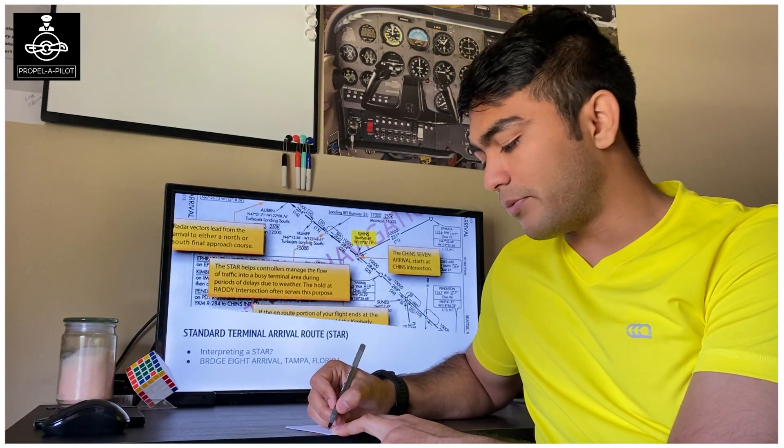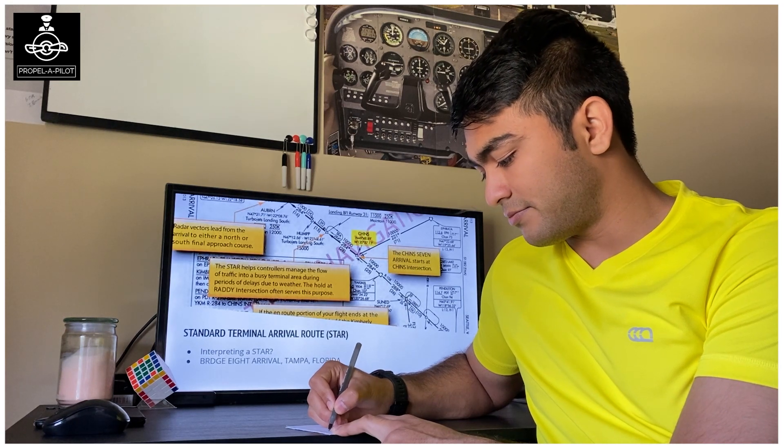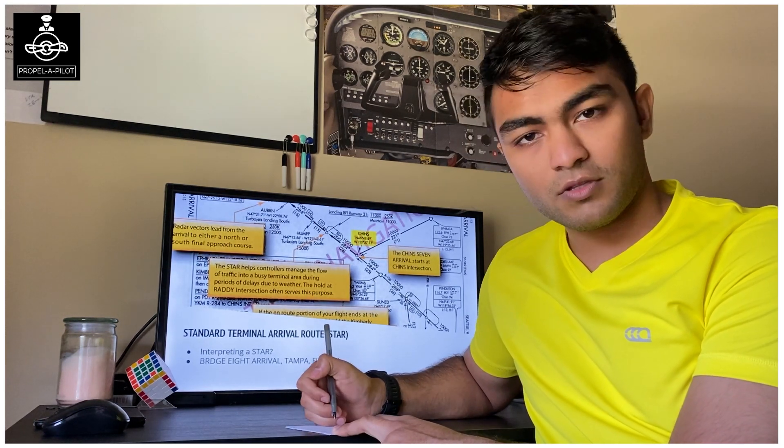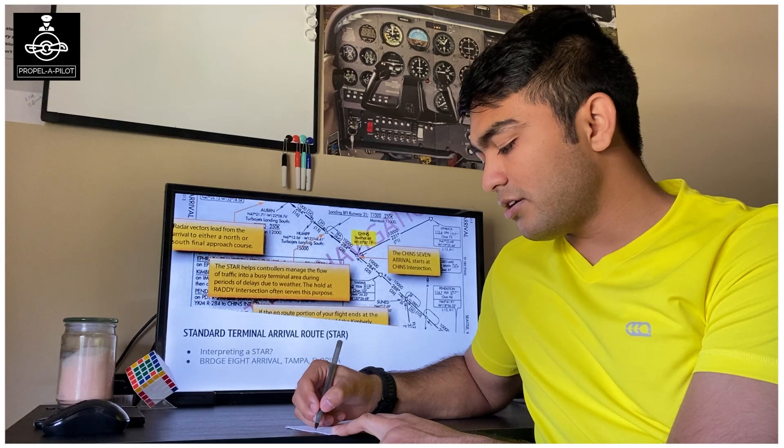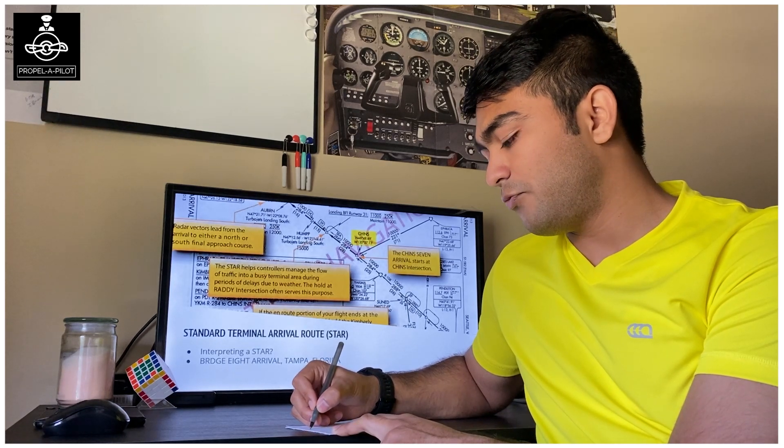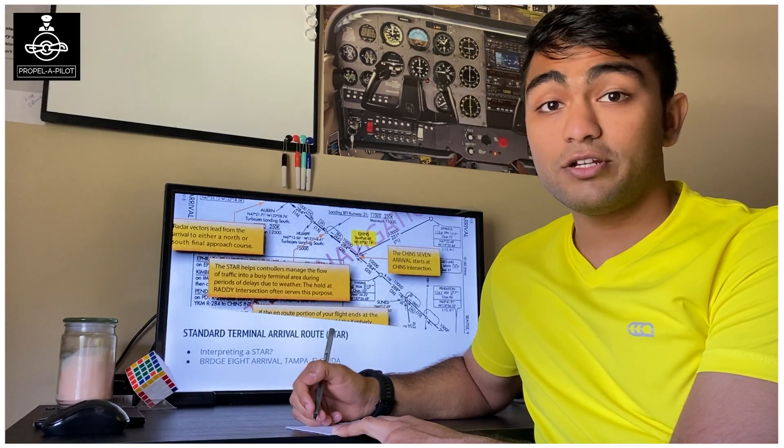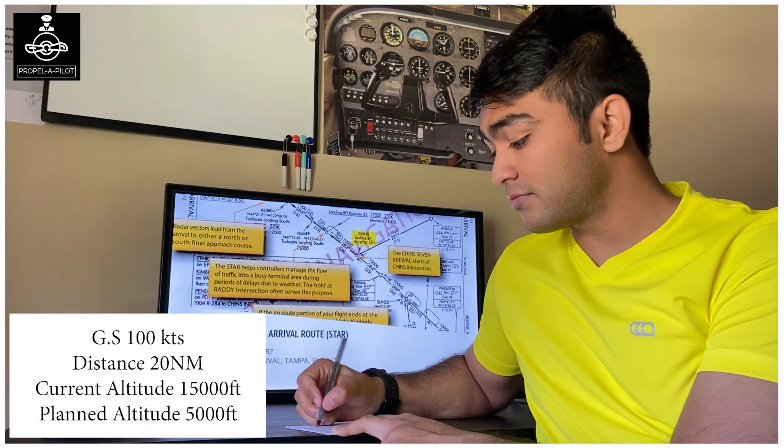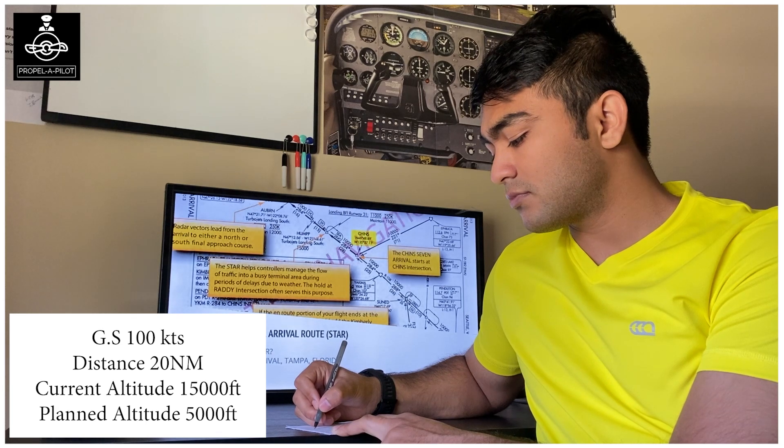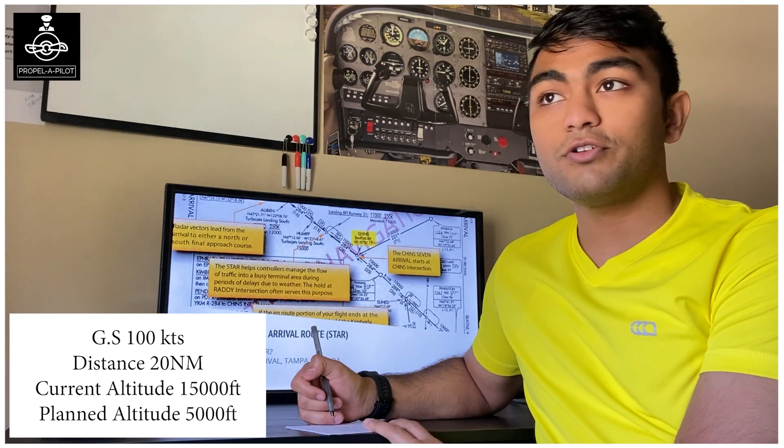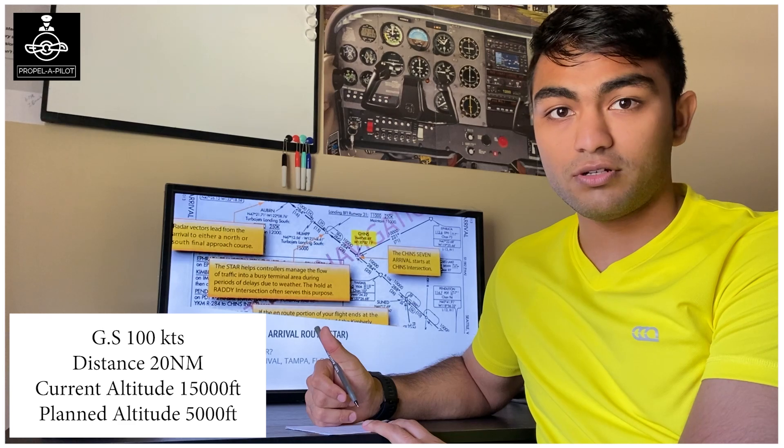20 miles away from a particular intersection. Your current altitude is 15,000 feet. The altitude that you need to be at the fix is 5,000 feet. What you need to do is first find out the time required to reach the fix.